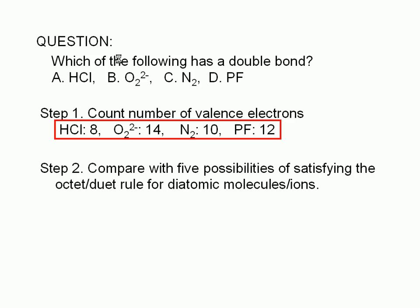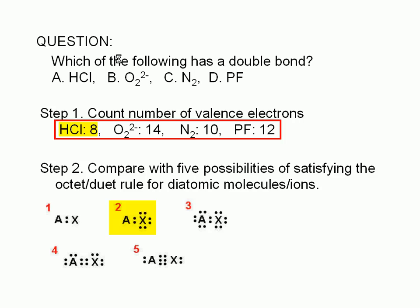For diatomic molecules or ions, there are only five unique ways of satisfying the octet or duet rule, and here they are. We can see that only structure two has eight valence electrons. Therefore, we expect the hydrogen chloride molecule to have this structure. There's a single bond between the two atoms and three lone pairs around the chlorine.